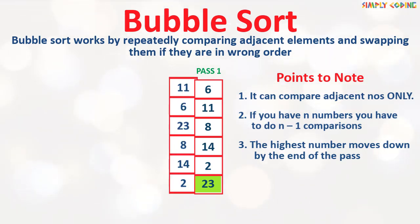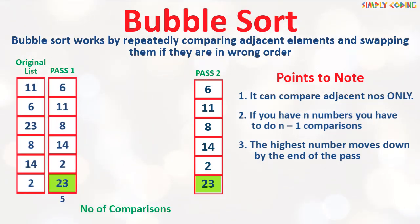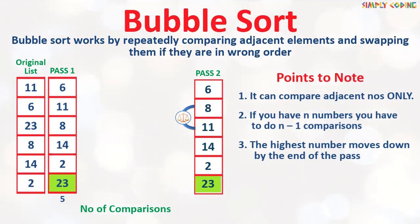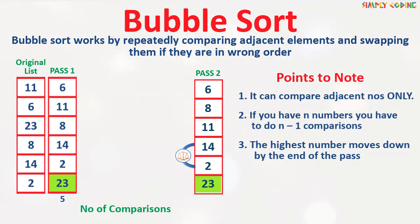For our next pass we will check only the first 5 numbers, meaning we will do 4 comparisons, starting from the beginning again. The program compares 6 with 11 — 6 is smaller so nothing needs to be done. Then it compares 11 with 8 — 8 is smaller so it moves up and 11 moves down. Then 11 is compared with 14 — 11 is smaller so nothing needs to be done. Next 14 is compared with 2, and 2 moves up and 14 moves down. In this pass we have the second highest number in its correct place.